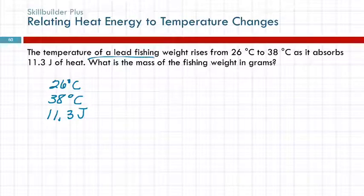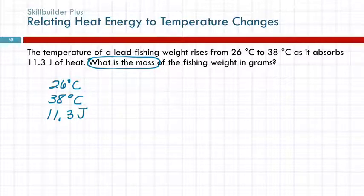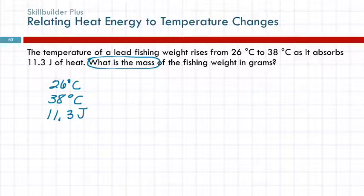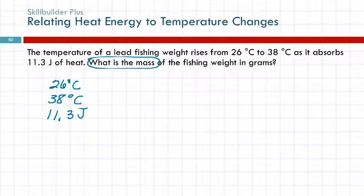The question is: what's the mass? Well, what equation are we going to need? We have heat, we have things changing temperature. This isn't a temperature conversion, and it's not a dimensional analysis problem either — it's a heat capacity problem. So Q equals MC delta T is the equation we're going to use.